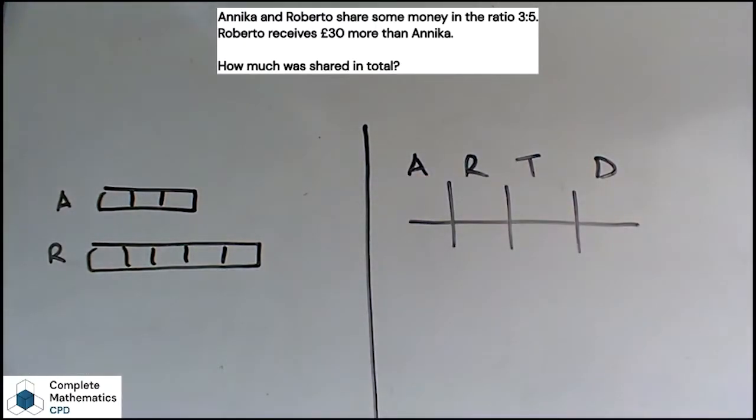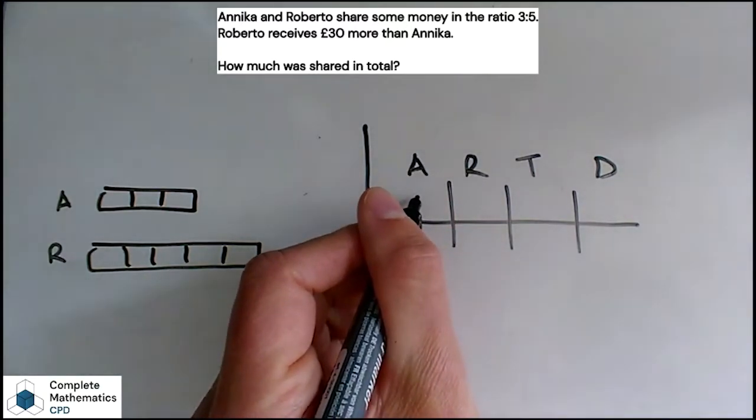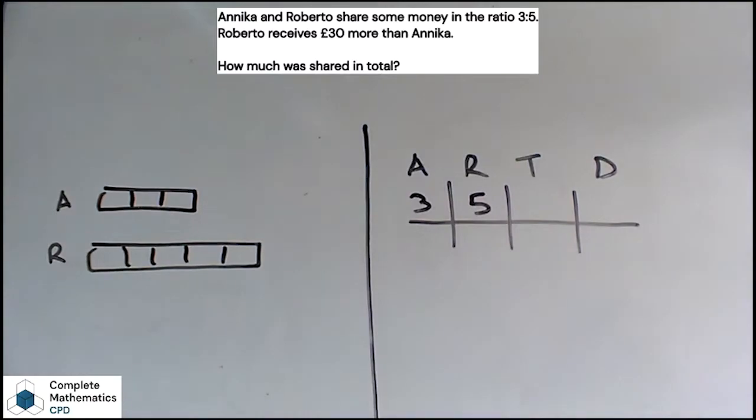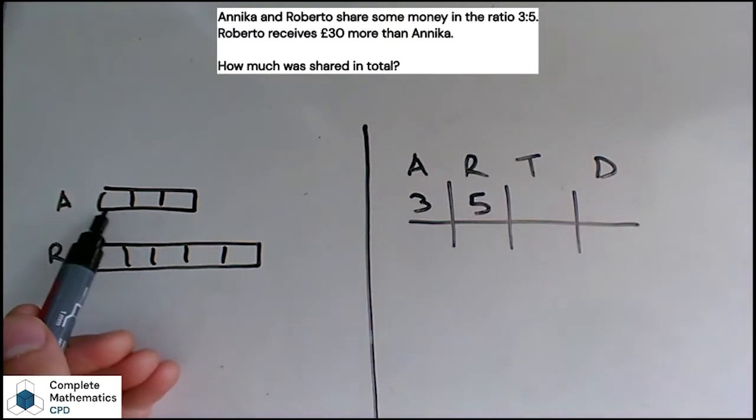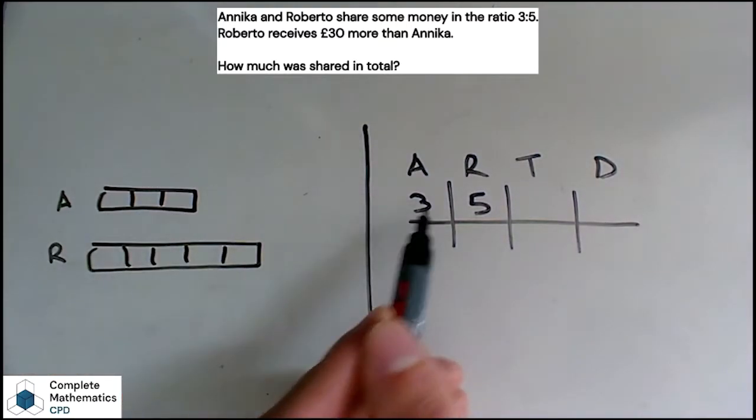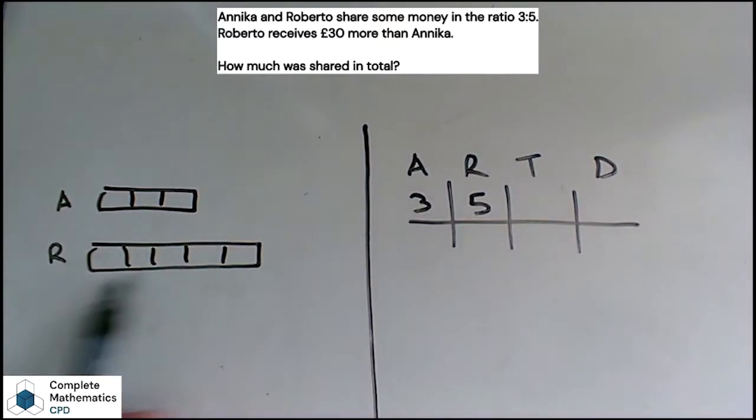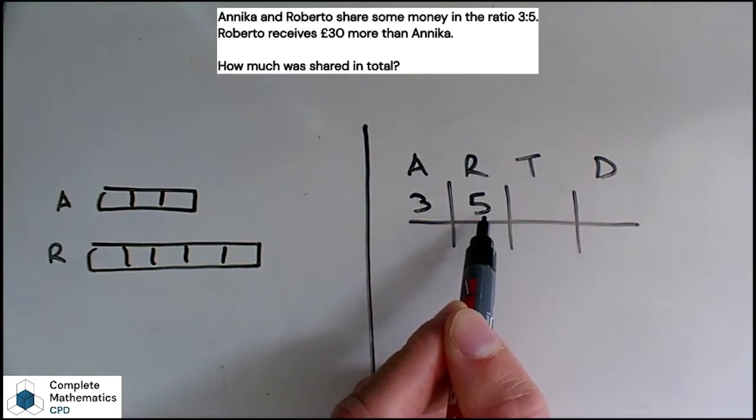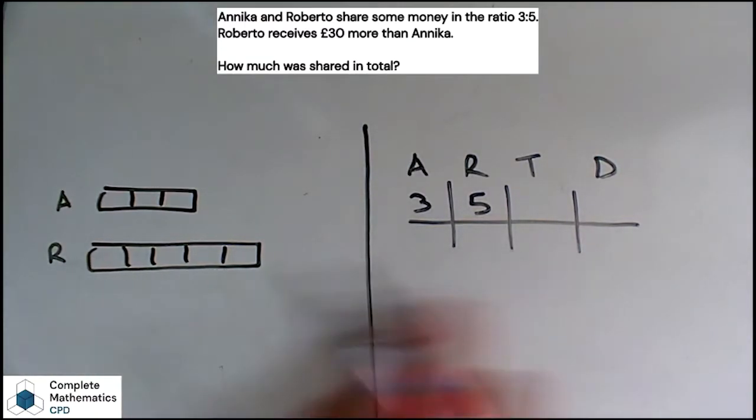Now you don't always need all four of these columns, but in these early stages I'll put them all on. We know that Anika and Roberto are sharing money in the ratio 3 to 5. So there's the basis of my two models. I'll pause at this moment and make sure pupils are okay with these three parts being represented by this 3 here, and these five equal parts being represented by this 5 here. It's drawing the links between the two models.